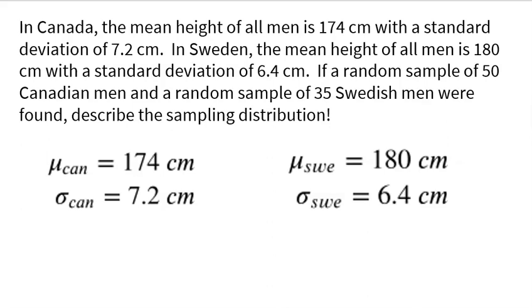In Canada, the mean height of all men is 174 centimeters with a standard deviation of 7.2 centimeters. In Sweden, the mean height of all men is 180 centimeters with a standard deviation of 6.4 centimeters. If a random sample of 50 Canadian men and a random sample of 35 Swedish men were found, describe the sampling distribution.